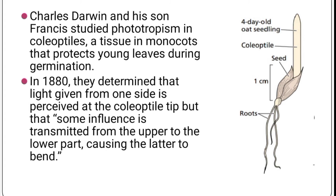Charles Darwin and his son Francis studied phototropism in coleoptiles, a tissue in monocots that protects young leaves during germination. In 1880, they determined that light given from one side is perceived at the coleoptile tip, but that some influence is transmitted from the upper to the lower part, causing the latter to bend.